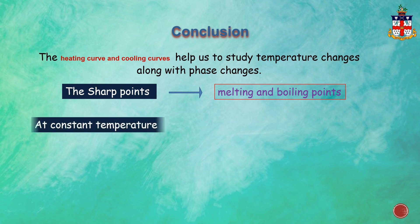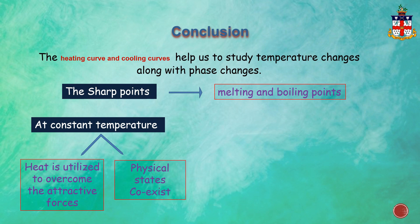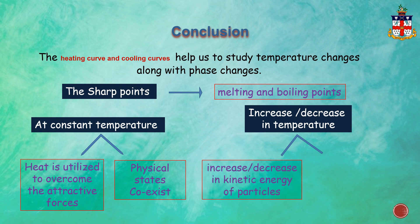At constant temperature in both the graphs, heat is utilized to overcome the attractive forces and physical states co-exist during this time period. The increase or decrease in the slope in both the graphs refers to an increase or decrease in kinetic energy and the existence of only one of the physical states.